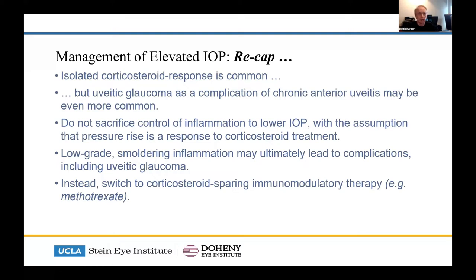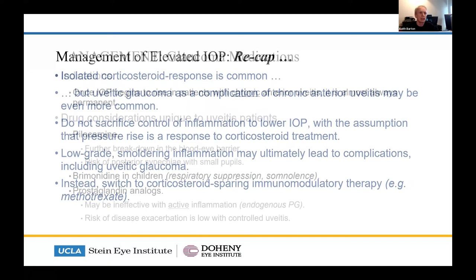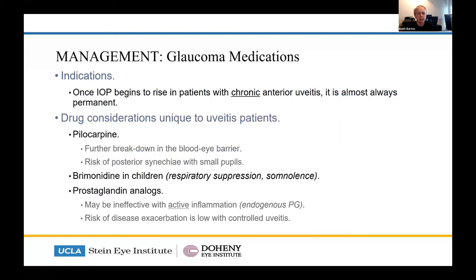...Humira, infliximab. Etanercept was used for a while, but there was a suspicion that it actually made uveitis worse. Once the IOP goes up in chronic anterior uveitis, it's almost always permanent. There are some medication considerations — we don't tend to use pilocarpine nowadays, and it's not very good in uveitis anyway.